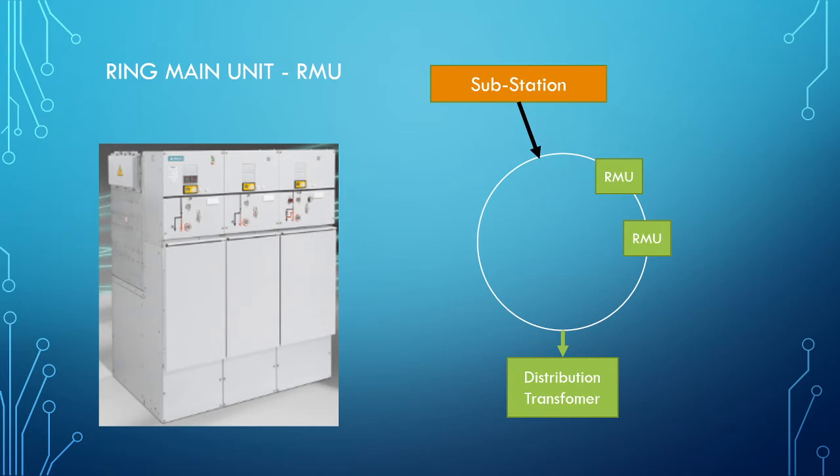First and most important point is RMU box takes lesser space comparing with H pole transformer structure. In H pole transformer structure, we have the pole structure and transformer is mounted over that. In RMU kind of the transformer installation, RMU is separately boxed and adjacent to that transformer is placed.